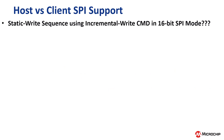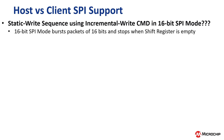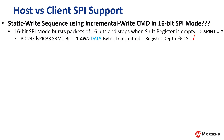Now that we've shown how data must be parsed for 16-bit transmission, let's look at how a host SPI module operating in 16-bit mode can facilitate a static write operation. As in 8-bit mode, the SPI module will burst packets of 16 bits and stop when the hardware shift register is empty. When the SRMT bit is set to 1 and the number of data bytes transmitted equals the target register depth, chip select can be raised to complete the static write operation.